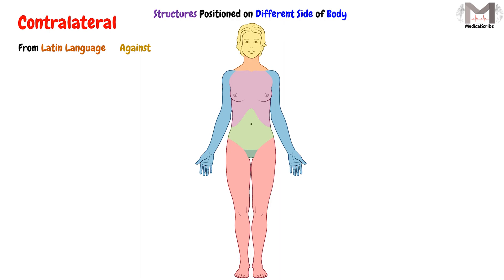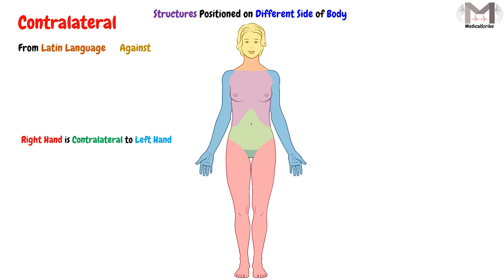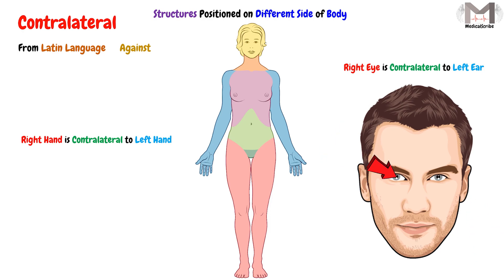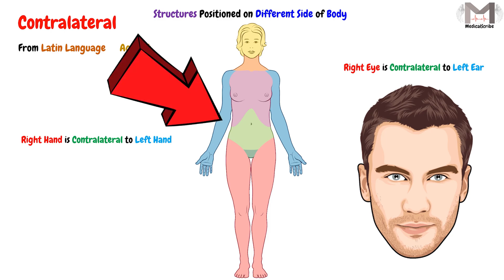So if we say the right hand is contralateral to the left hand, this means the right hand, which is on the right side of the body, is against the left hand, which is on the left side. Or if we say the right eye is contralateral to the left ear, that means the right eye on the right side is against the left ear on the left side. So contralateral means two structures exist on different sides of the body — one on the right side and one on the left side.